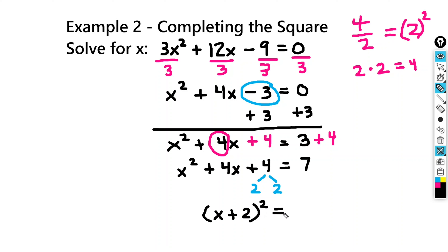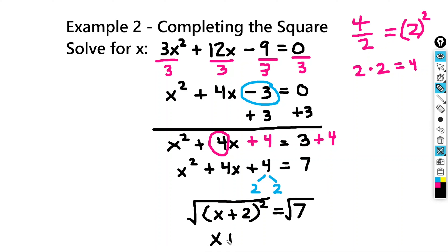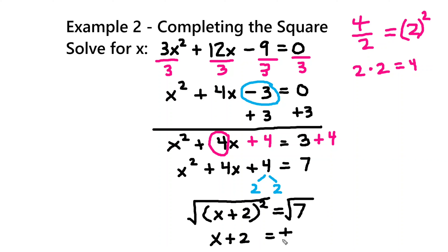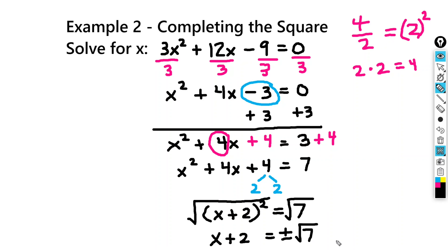And that's equal to 7. In our next step, we want to get rid of the square on the left-hand side. So we're going to take the square root of the left-hand side, and also the right-hand side. We'll get x plus 2 equals, and we have to consider both the positive and negative root, so plus or minus the square root of 7.